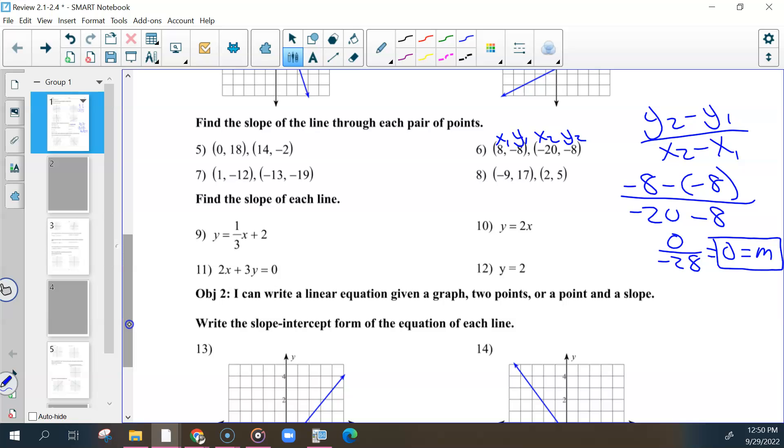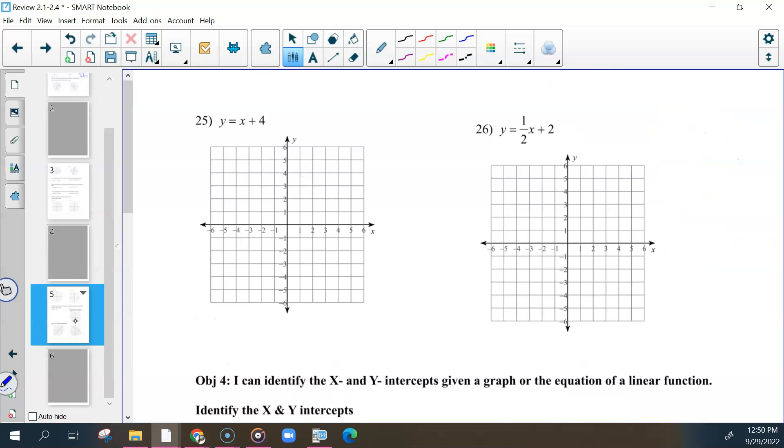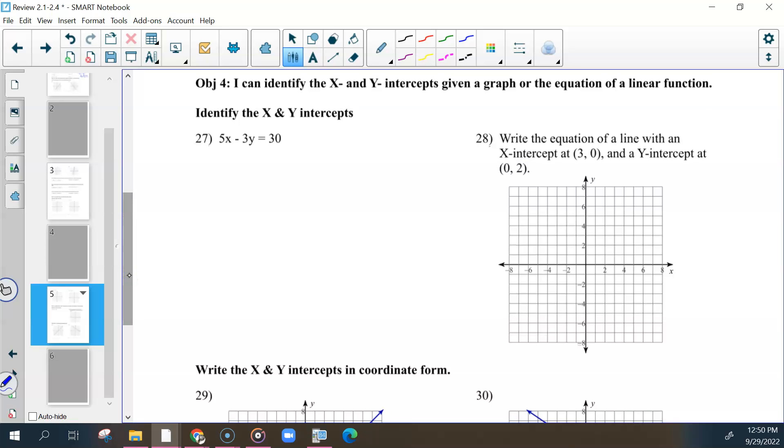For 28, this ties the intercepts and writing together. It gives you your x and y intercepts—plot those two points at 3, 0 and 0, 2. Use your graph to count your slope. If I start at my y intercept and count to my x intercept, I'm going down 2 to the right 3. After you have your slope, you're given your y intercept, so put those two things together: y equals negative 2 thirds x plus 2.